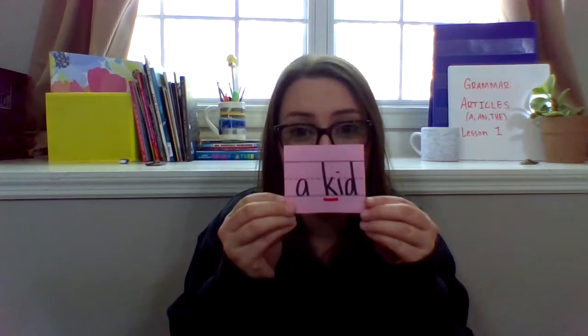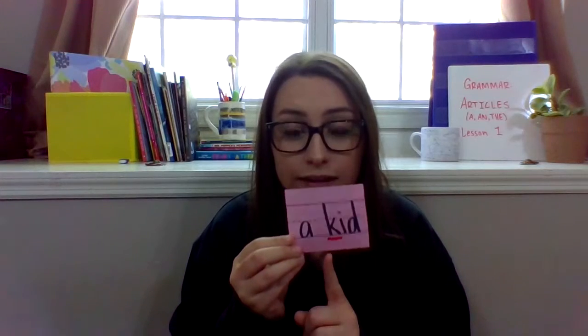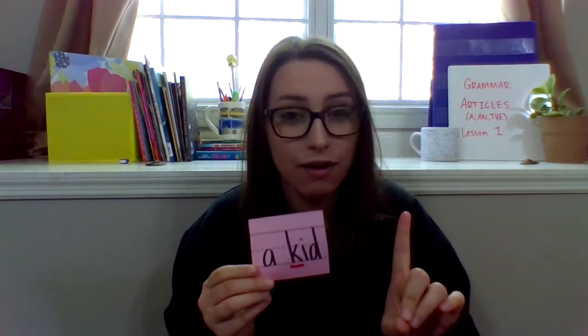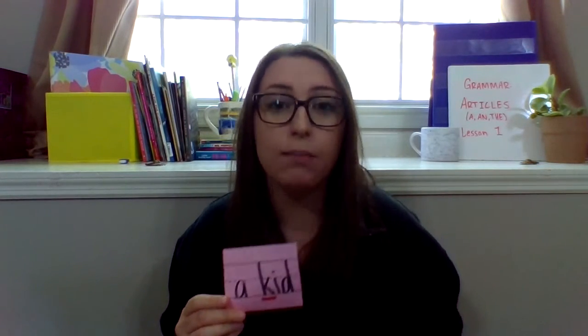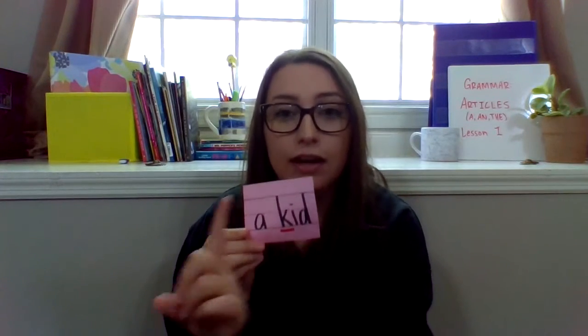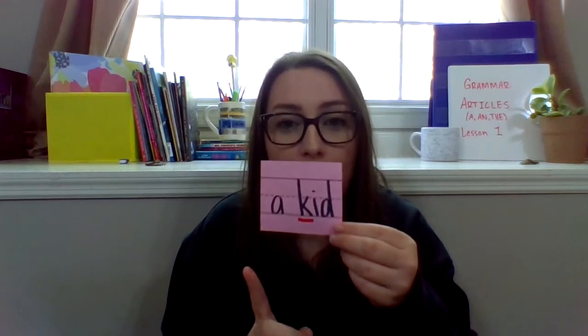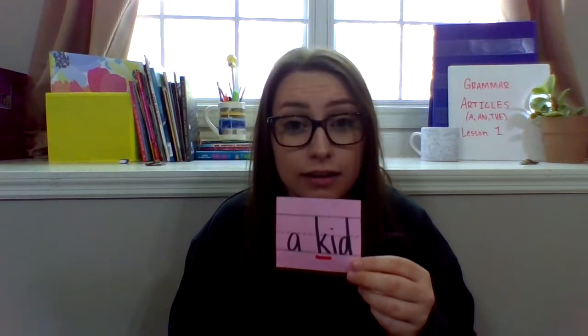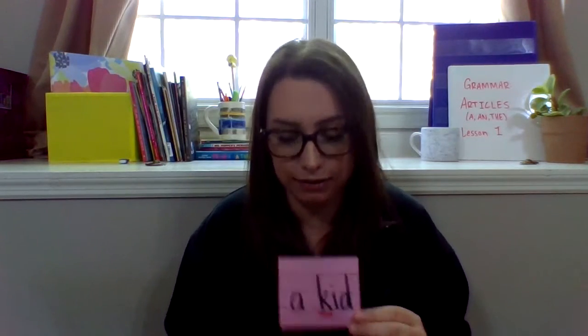If I said 'kid,' would I want to use 'a' or 'an'? Would it be 'a kid' or 'an kid'? It's 'a,' because our first sound is a consonant sound. Remember, 'a' goes with the first sound if it's a consonant. So, a kid — because 'kid' has a consonant sound at the beginning.